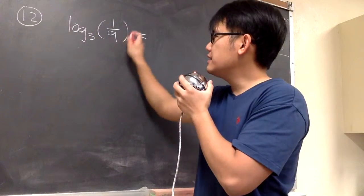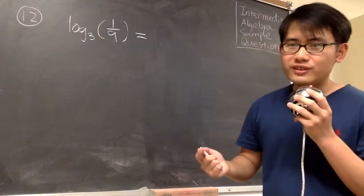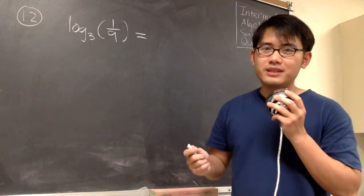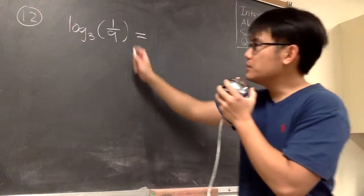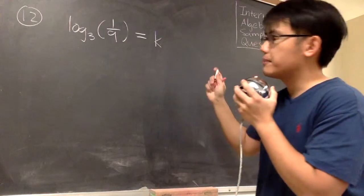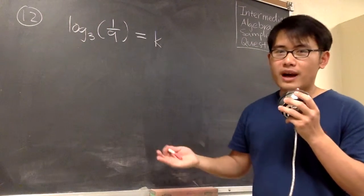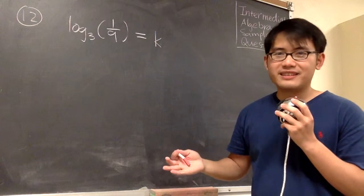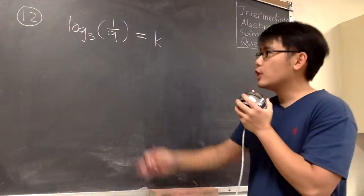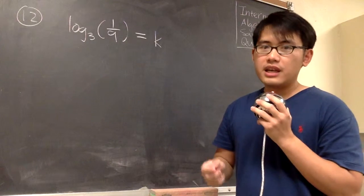First, we have to know that this is just going to be a number, but unfortunately we don't know what it is at the moment. So let me just say this is equal to some variable k. You can use x or y — it doesn't matter. And then what we do next is we pretend both sides are exponents.